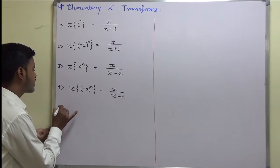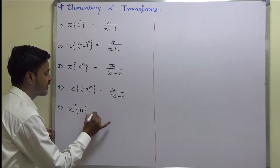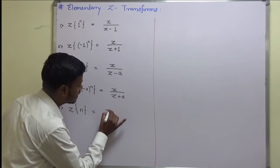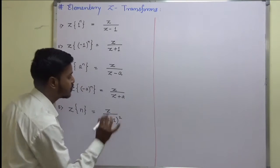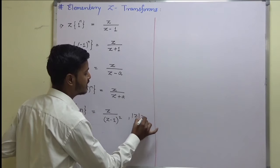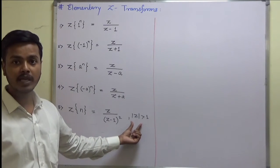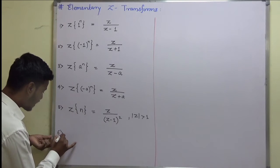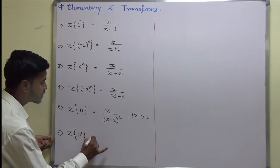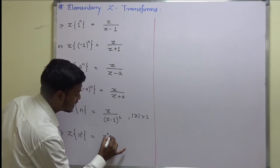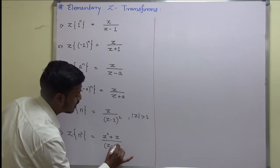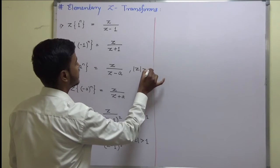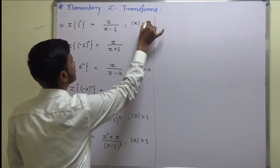The next Z transform is Z transform of n, which we have used while solving problems. Z transform of n is z/(z-1)², where mod of z should be greater than 1 — here mod of z refers to the absolute value of the complex number z. Then we have Z transform of n² which is (z²+z)/(z-1)³, again with mod of z greater than 1.